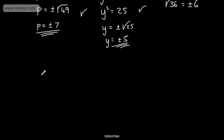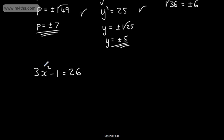Let's now push it out and do something slightly more challenging. Let's say we have 3x squared minus 1 is equal to 26, and we want to solve for x. As we would with any other equation, we add 1 to both sides. So 3x squared is equal to 26 plus 1, which is 27.